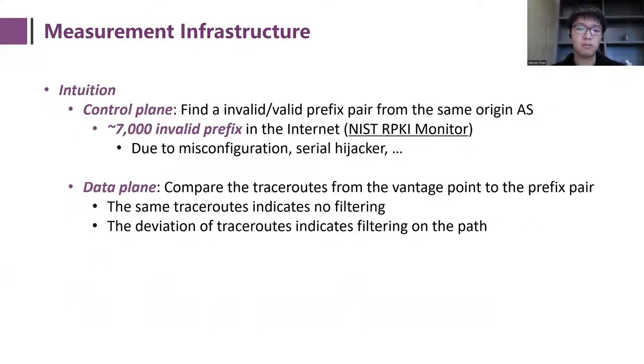First, I am introducing the measurement infrastructure. The intuition of our measurement infrastructure can be described as follows. First, we find the invalid and valid prefix pair from the same origin AS in the control plane. According to reports, the daily number of observed invalid prefixes in the internet is about 7,000, which can greatly amplify the number of observations. Then in the data plane, we compare the trace routes to the ground vantage point to the prefix pair, and the results can indicate the filtering behavior of different paths.